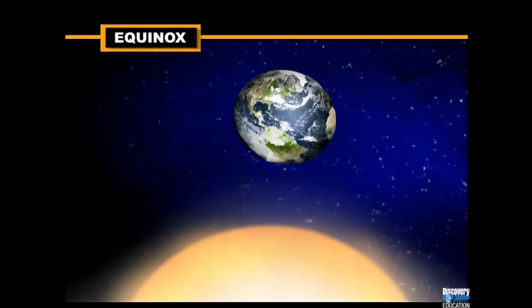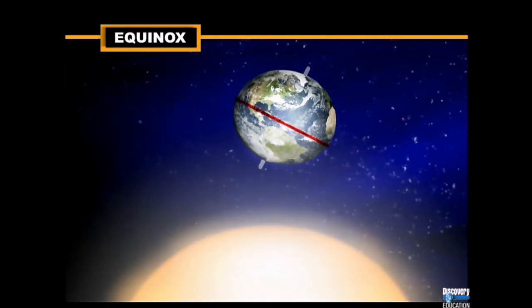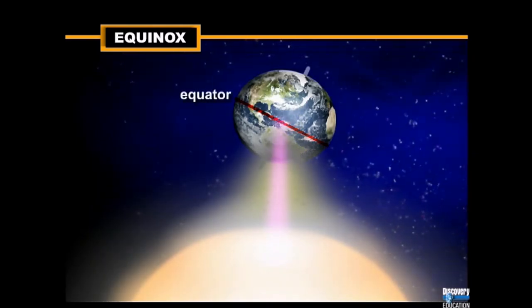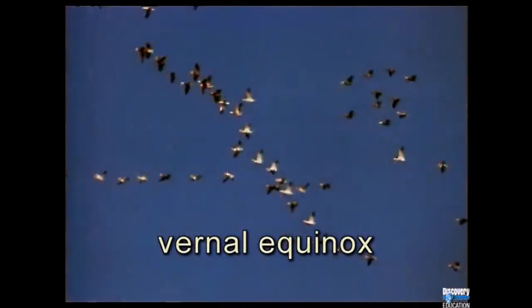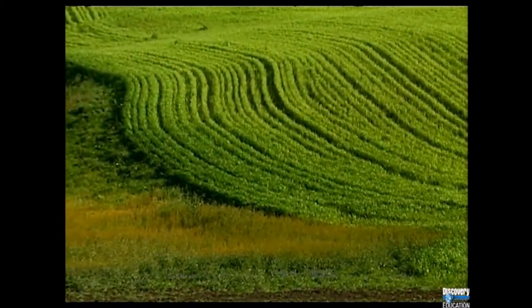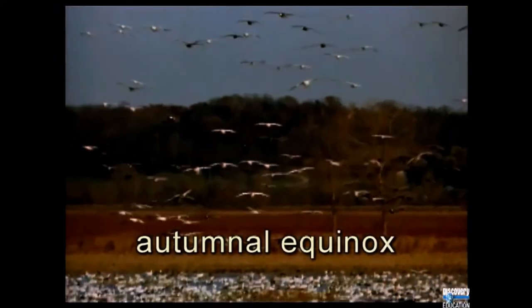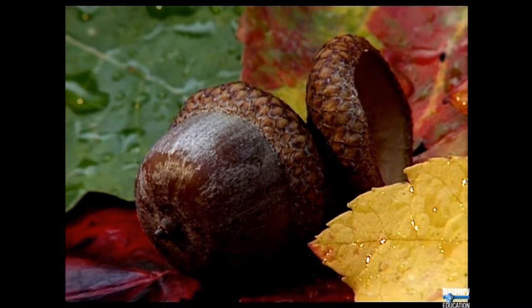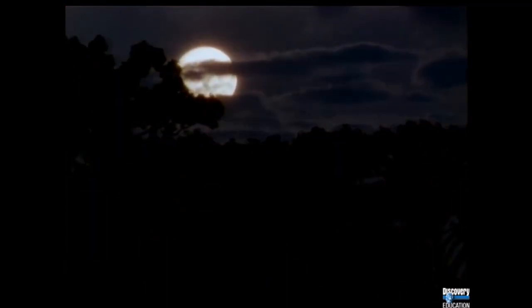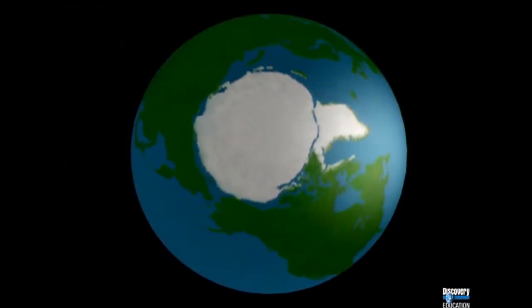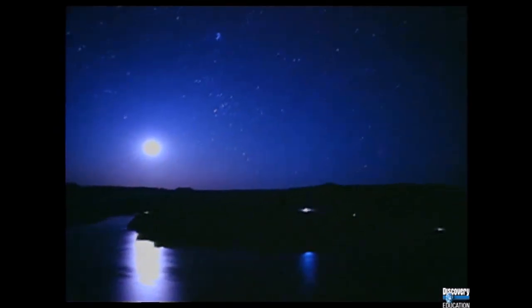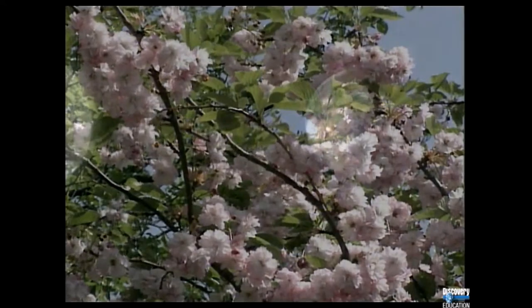Twice a year, the North and South Poles are equidistant from the sun and daylight and night are equal in length — this is known as an equinox. The vernal equinox marks the beginning of spring in the Northern Hemisphere, around March 21st. The autumnal equinox occurs around September 23rd. Days and nights at the equator are always about 12 hours long. The farther north or south from the equator, the more obvious the lengthening and shortening of days, with some parts of Alaska spending two months in darkness around the winter solstice.